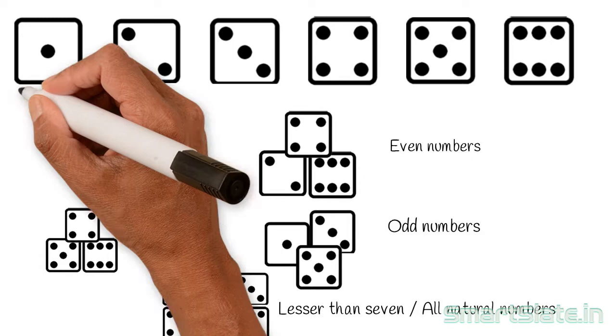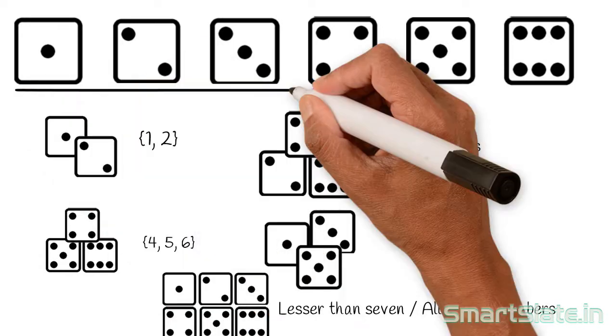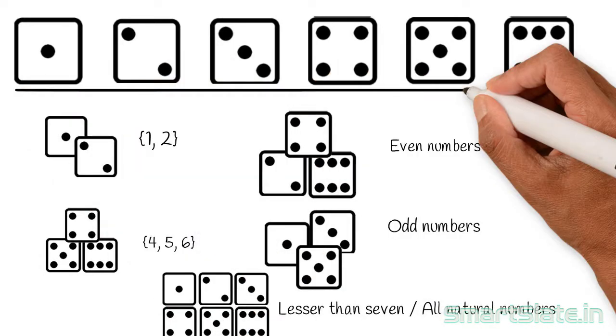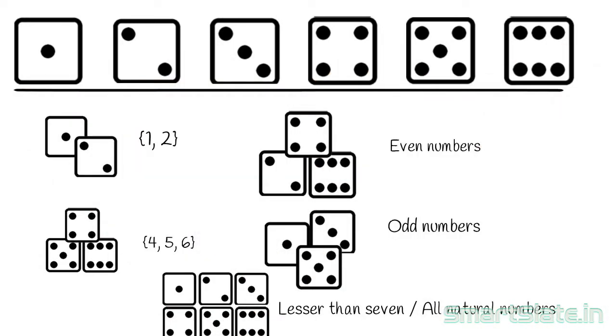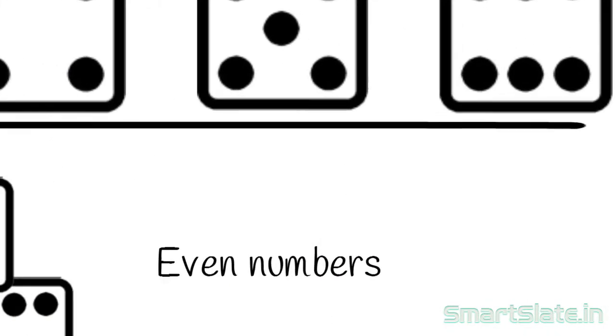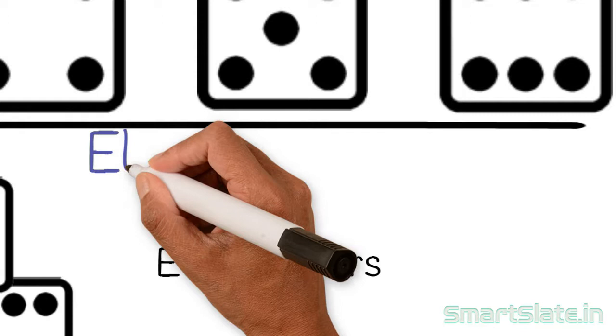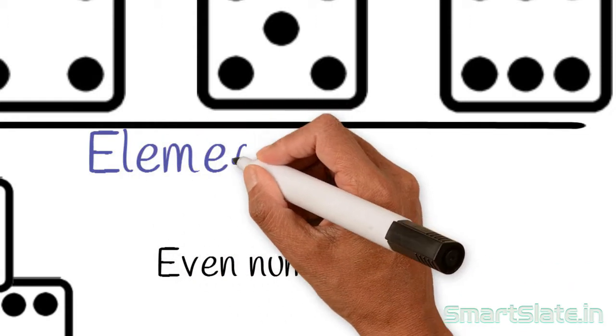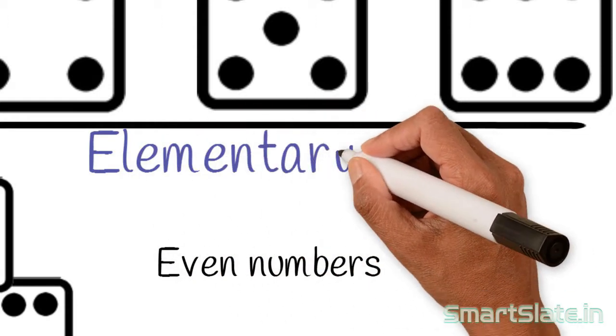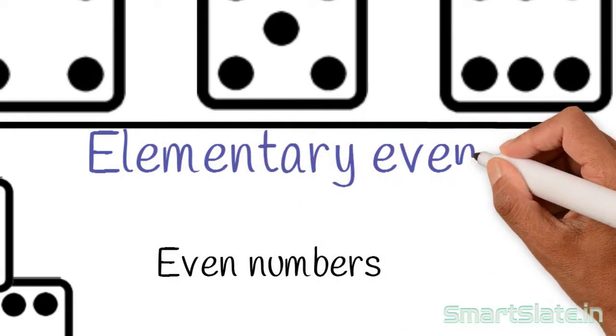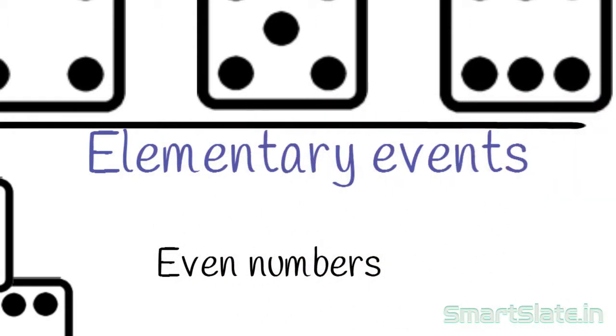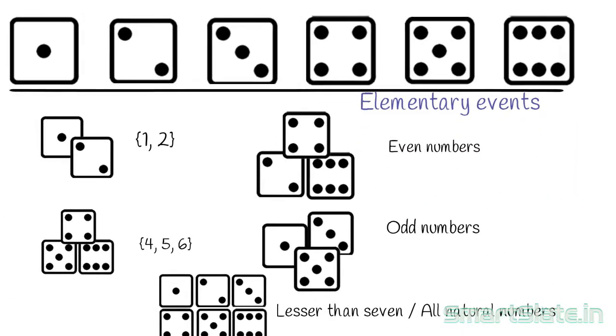Let's categorize these events. Getting 1, 2, 3, 4, 5, or 6 — these are all elementary events. Each individual outcome of a random experiment is an elementary event.